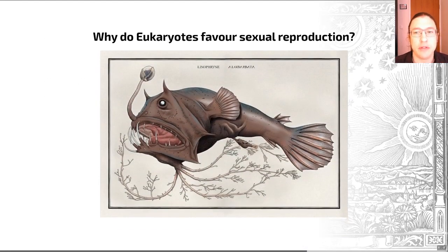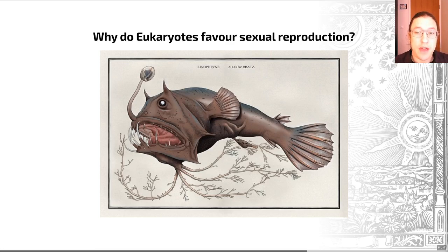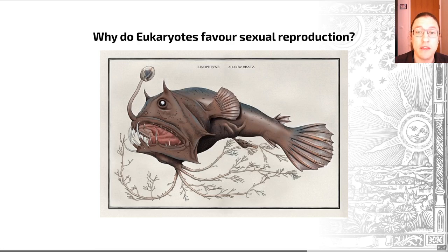A key feature in many eukaryotes' life cycles is sexual reproduction. This is especially true of macroscopic organisms — animals, plants, and fungi, for example. You may never have thought about it, but sexual reproduction is kind of weird. It has a two-fold cost: only half of the individuals can bear young, it requires males to find females, and when they do find each other, they only pass on half of their genetic material.